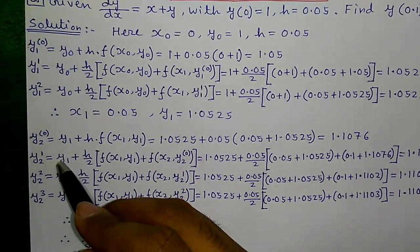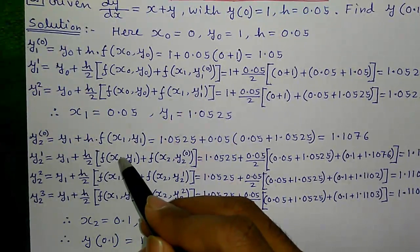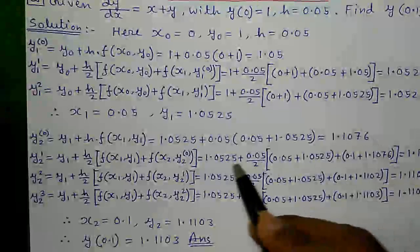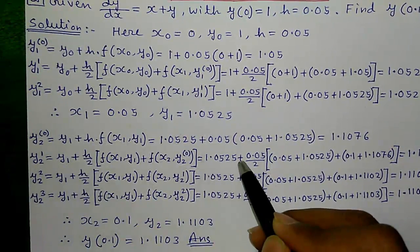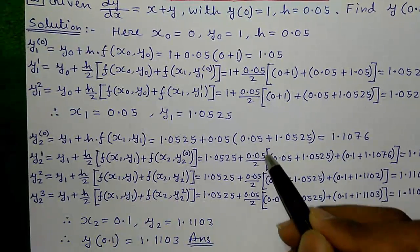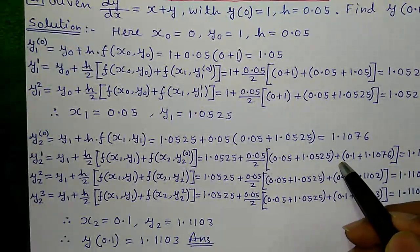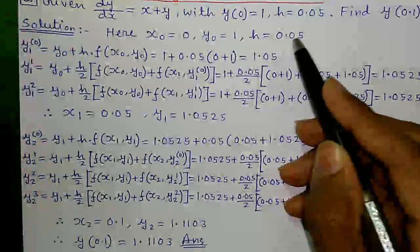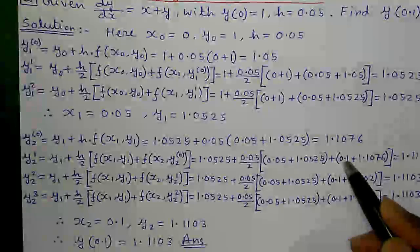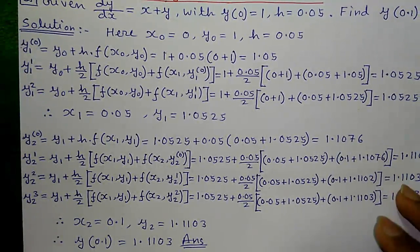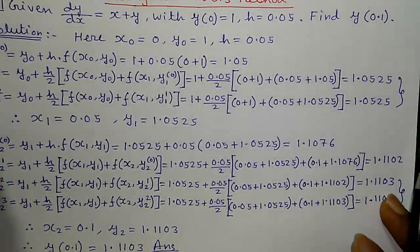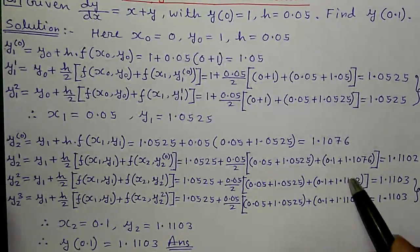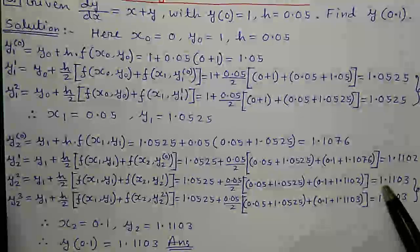Next, the corrector: y2(1) equals y1 plus h/2 into [f(x1, y1) plus f(x2, y2(0))]. Here y1 is 1.0525, h is 0.05, x1 plus y1 gives the first function value, and x2 equals x1 plus h equals 0.05 plus 0.05 equals 0.1, with our previous value 1.1076. This gives y2(1) equals 1.1102. Similarly, y2(2) using the same formula with 1.1102 gives 1.1103.